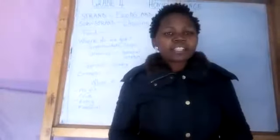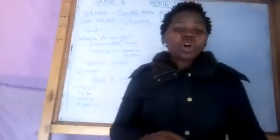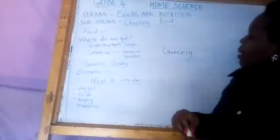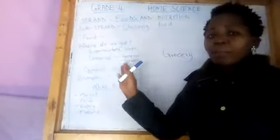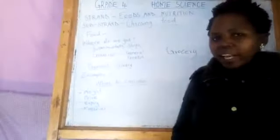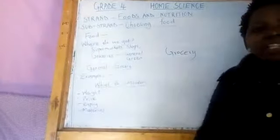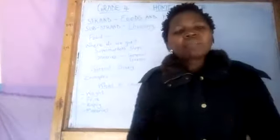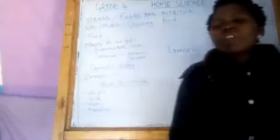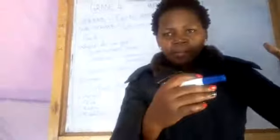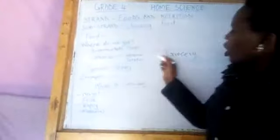There are two types of groceries. There is a general grocery and also a green grocery. A green grocery is where we get foods like fruits and vegetables — purely fruits and vegetables. A general grocery is where all types of foods are sold. If you want avocado, if you want beans, if you want rice — whatever you want, all types of foods you can get from a general grocery.